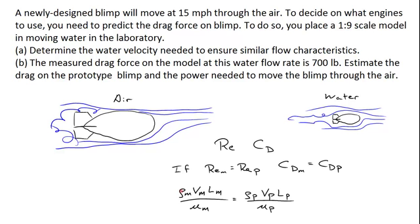Let's expand this out. Here is the density, velocity, and length scale for the model, and the viscosity — so in this case it would be the density of water, the viscosity of water, and the velocity of the water that we're interested in. And here's the Reynolds number for the prototype: the density of air, the viscosity of air, the length of the full size blimp, and the velocity at which it's flying, which is 15 miles an hour.